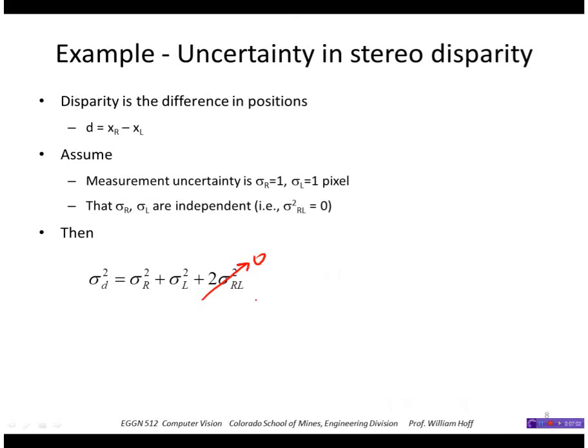And if the sigmas are equal to one, then this is just one squared plus one squared, or two. So I would get that the standard deviation of the disparity would be, in this case, the square root of two.